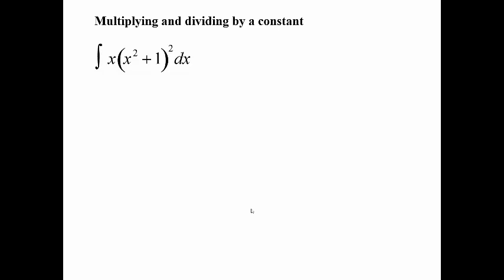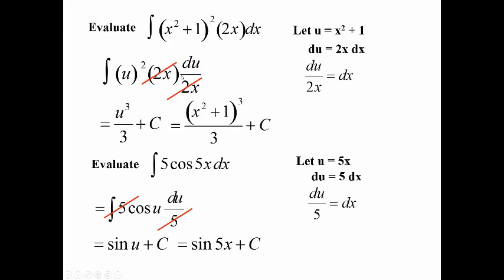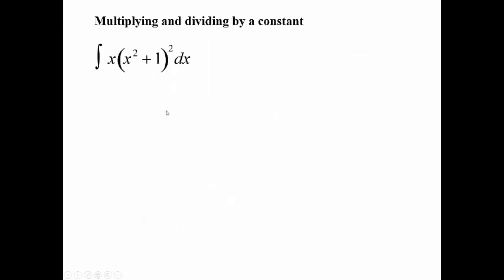Let's do one where it doesn't perfectly cancel out. In the previous two examples things cancelled perfectly, but here's how you know it's still a u-substitution: there's something on the inside, and the derivative of x² + 1 is 2x, but I just have an x here — it's close, only different by a constant. When it's just different by a constant, you still use the substitution method.